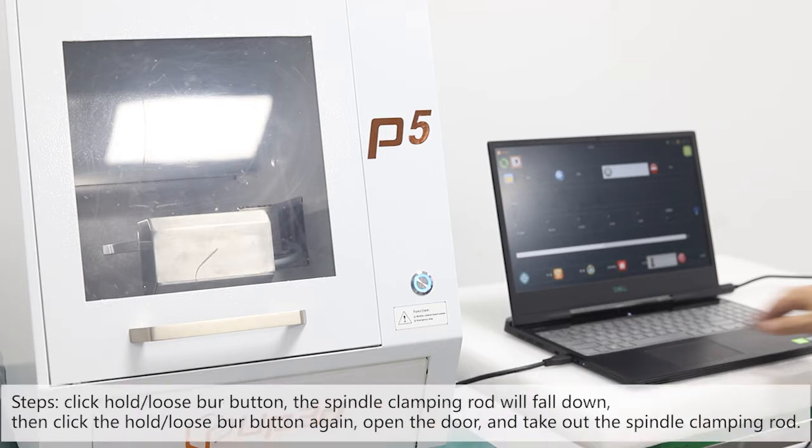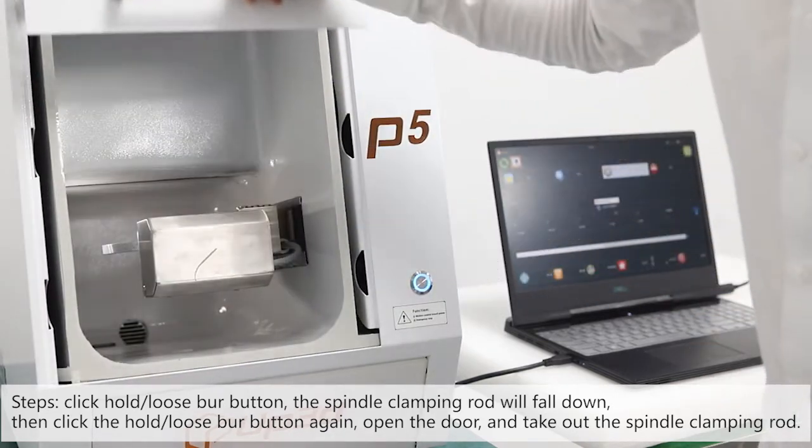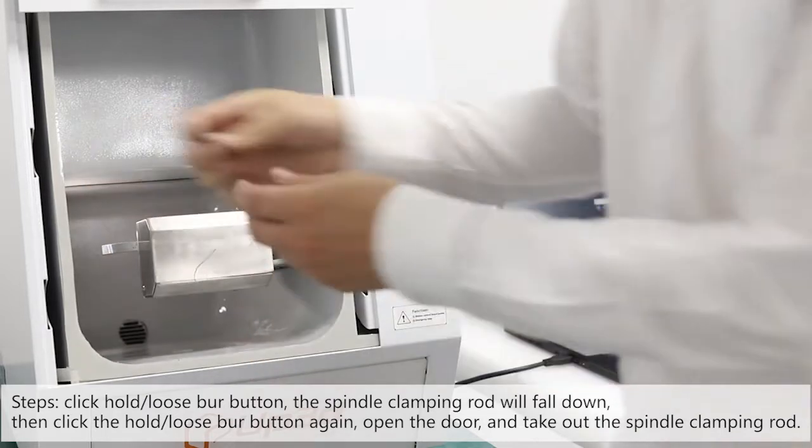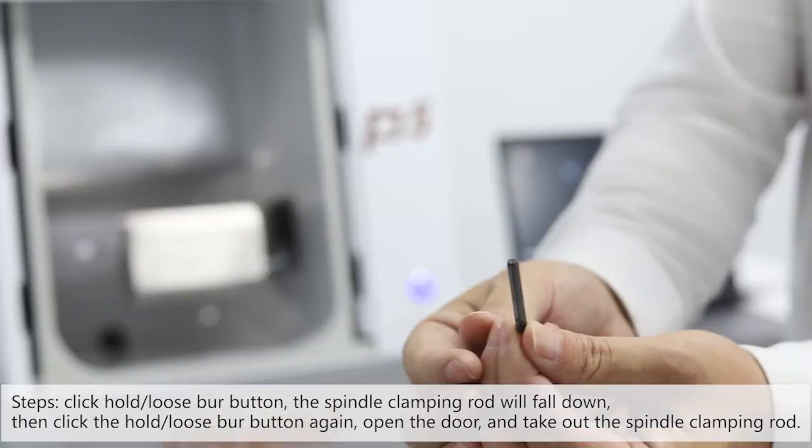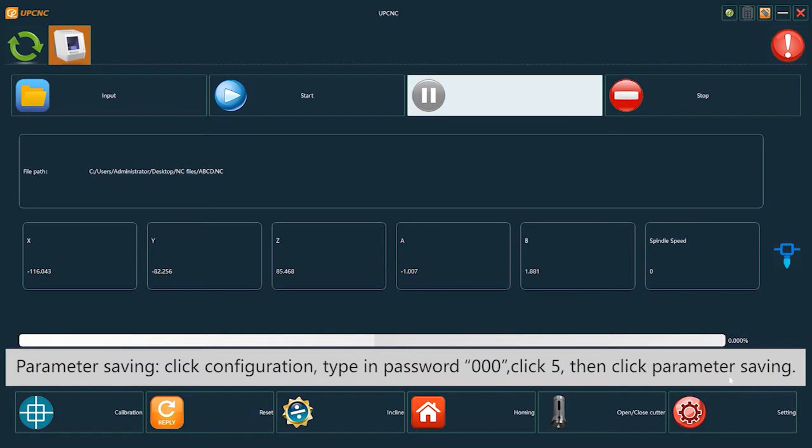Click the hold loose burr button. The spindle clamping rod will fall down. Then click the hold loose burr button again. Open the door and take out the spindle clamping rod.